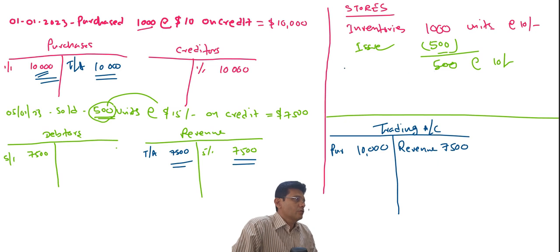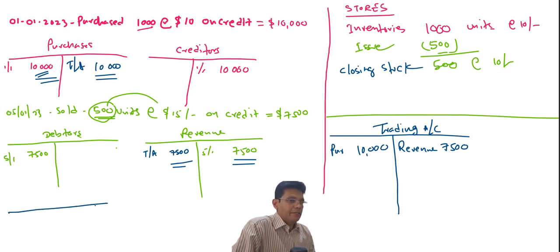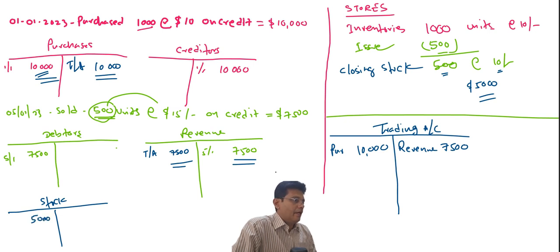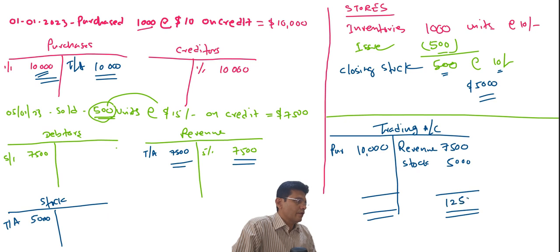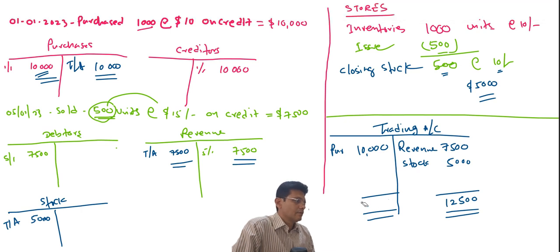There is also a closing stock. This closing stock has to be transferred to the trading account. The double entry is: debit the Stock Account and credit the Trading Account. Closing stock is 500 units at $10 = $5,000. So $5,000 is debited to Stock Account and credited to the Trading Account. The total comes to $12,500 and the gross profit is $2,500.